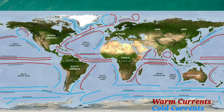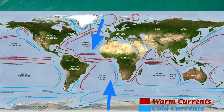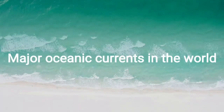While cold currents carry cold water, they originate near the poles or higher latitudes and move towards the tropics or lower latitudes. Let us know some major oceanic currents in the world.